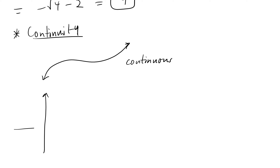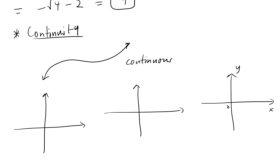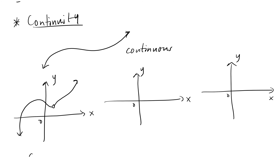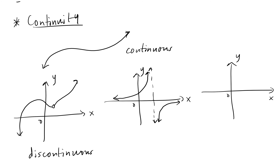What are examples of functions that are not continuous? On the xy-plane, one example is a graph with a hole — that's discontinuous. Or a graph with a vertical break — also discontinuous. Or a graph with a jump discontinuity. All these graphs are discontinuous.